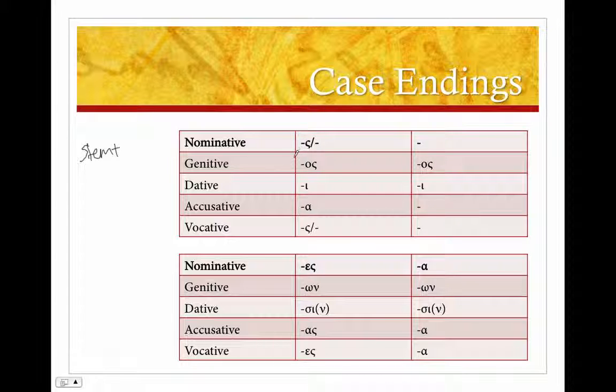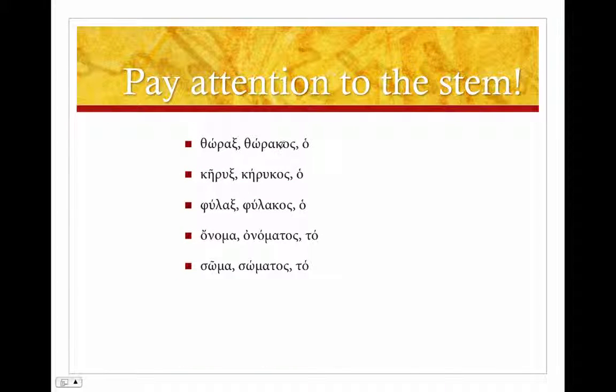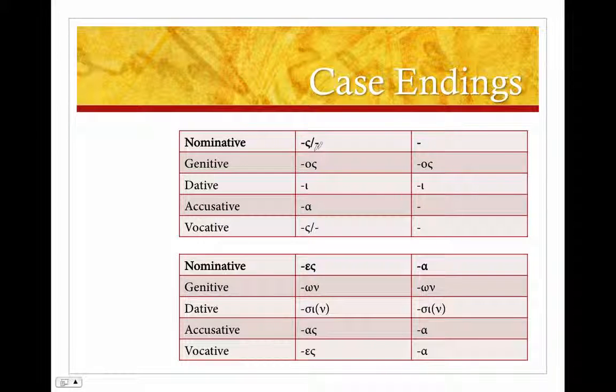Now the endings for the nominative is either going to be a sigma, and if we go back to thorax thoracos you'll notice kappa plus sigma equals x, or it'll be nothing at all, like soma somatos. Here as a shorthand we've got the singulars up above, plurals down below. We've got masculine and feminine which have the same endings and the neuters, and you'll notice the neuters are actually quite predictable and very closely related to the masculine and feminine. So let's take a look at the masculine and feminine endings first. Sigma or nothing, and you'll know that from the nominative singular.